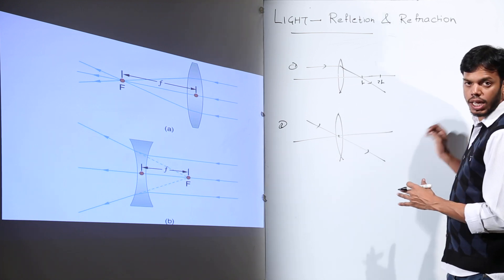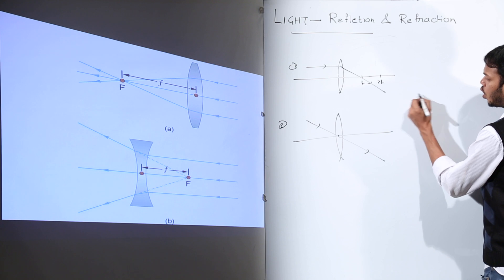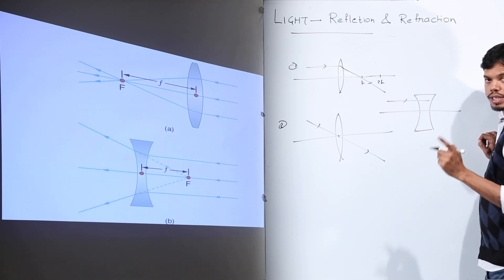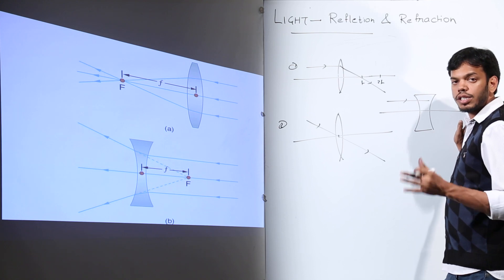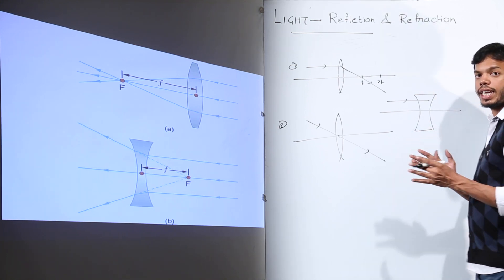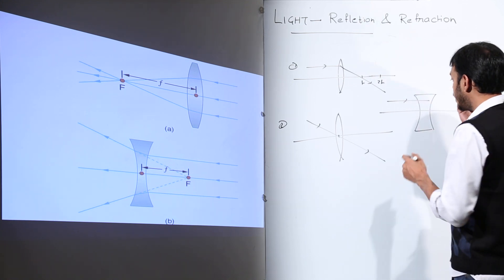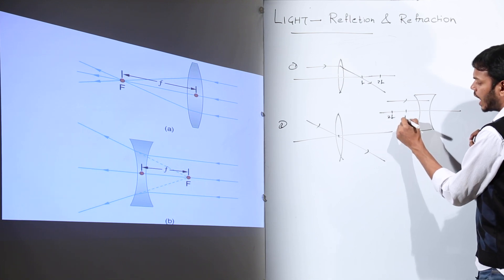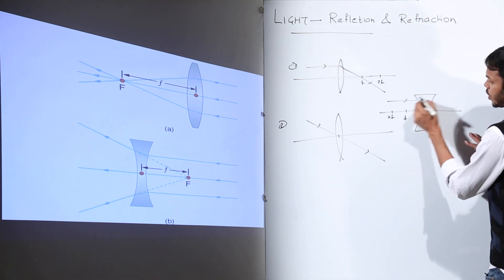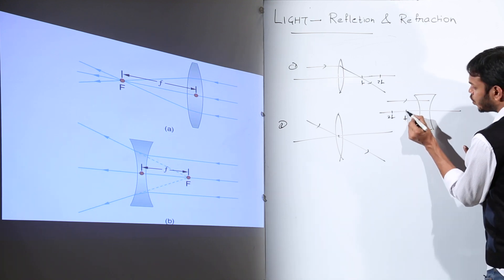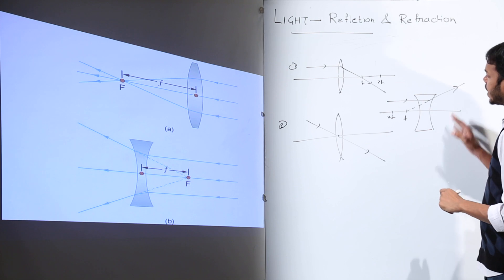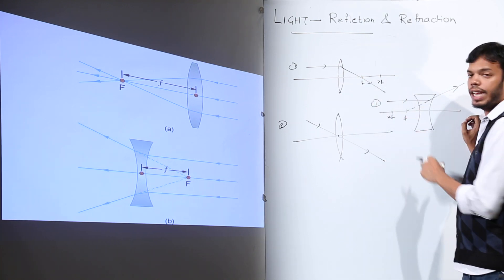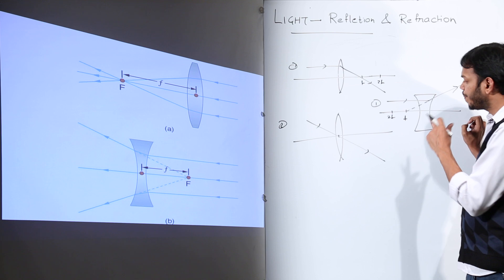The ray passing through the optical center goes straight without changing direction — this applies to both convex and concave lenses. For a concave lens, the first surface focus and 2F are measured from the first surface. A ray parallel to the principal axis, after refraction through the concave lens, appears to diverge from the focus on the same side. Extending this refracted ray backward shows it appears to come from the focus virtually.